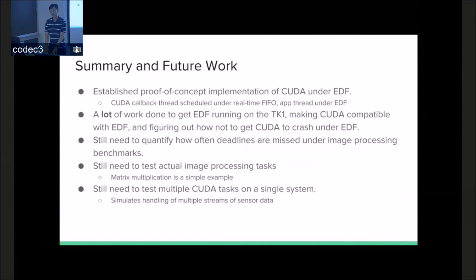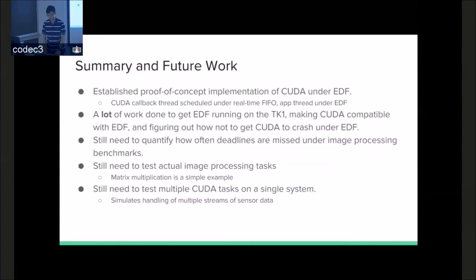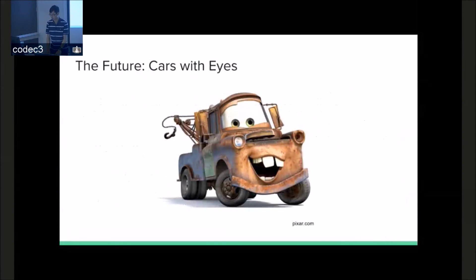In the future, what would be useful is to characterize deadline misses with CUDA applications, specifically considering how the GPU is a completely separate beast from the CPU — we can't actually stop what we're doing on the GPU without being a detriment to the entire system. We still need to run image processing tasks and throw more tasks into it, because you're not just going to do matrix multiplication to avoid pedestrians and drive down a road. You have more than one camera looking forward, backward, left, right, all sorts of directions. Thank you.